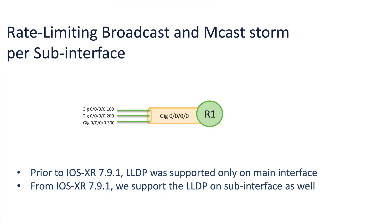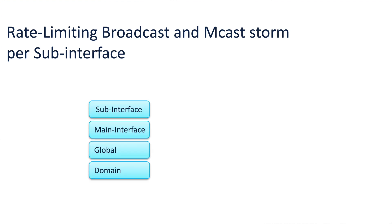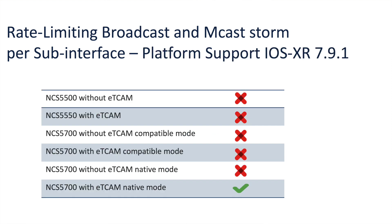The next enhancement is around rate limiting. Customers are very concerned about collateral damage from a storm on a single subinterface of a particular port. When a single subinterface on a port is stormed with multicast or broadcast punted traffic, it may impact the performance of all other subinterfaces on that particular port due to NPU resource sharing. From release 7.9.1, you can avoid such situations using rate limiting at the subinterface level for multicast and broadcast punted traffic. You can now configure multicast and broadcast rate limiting at subinterface level, interface level, global level, and domain level. The subinterface level rate limit configuration has the highest priority, followed by interface, global, and domain level. This feature is supported only on NCS 5700 platforms with external TCAM operating in native mode.